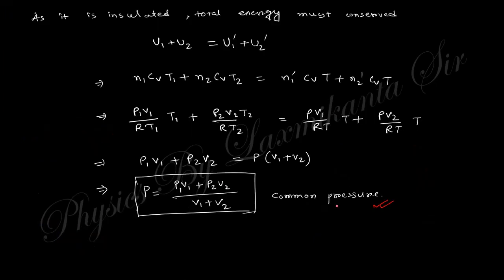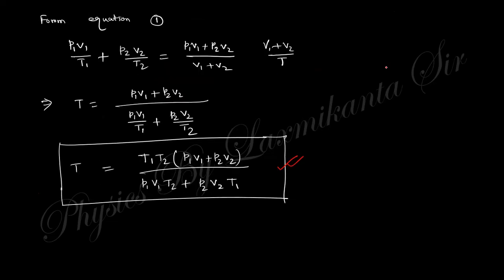Internal energy is also conserved, with U = n·Cv·T. Substituting n₁, n₂ and their temperatures into the energy conservation equation, the Cv terms cancel since the gas is the same in both vessels. This yields the common equilibrium pressure. Substituting this pressure back into the mass conservation equation gives the common equilibrium temperature T.